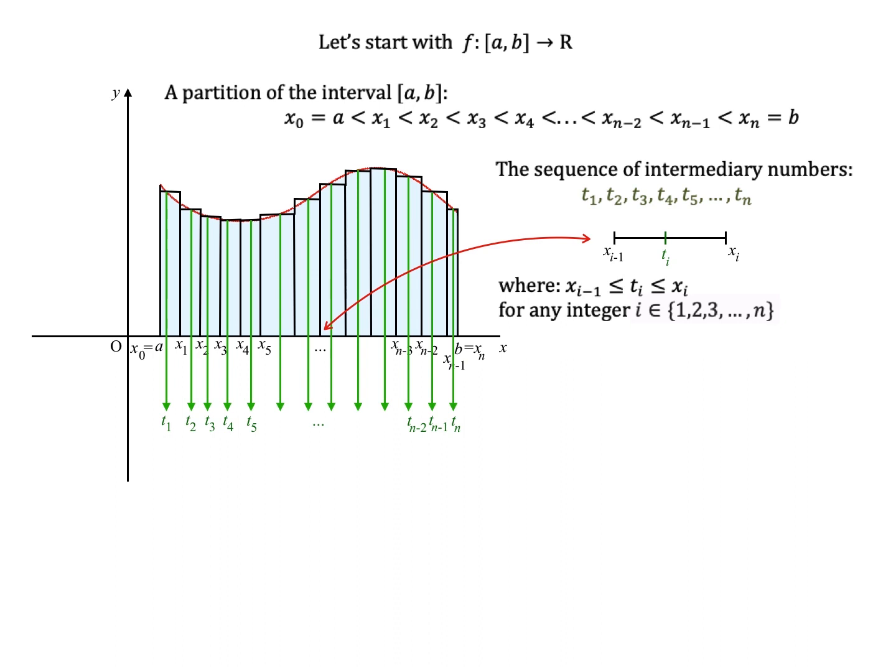We have now n rectangles that we've built and the surface area of each of these will be like before, the product between the value of f in the intermediary point and the length of the subinterval around that intermediary point.